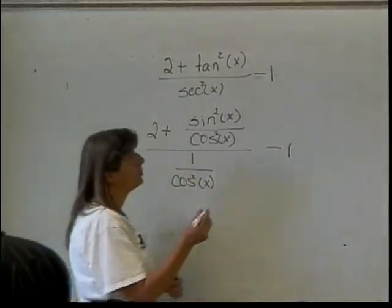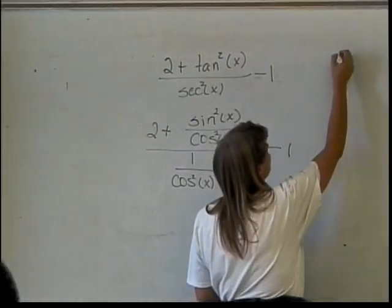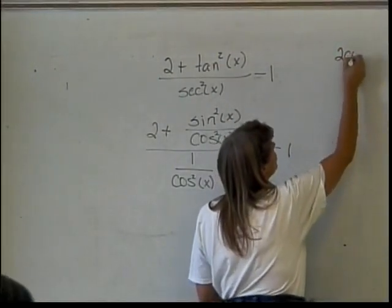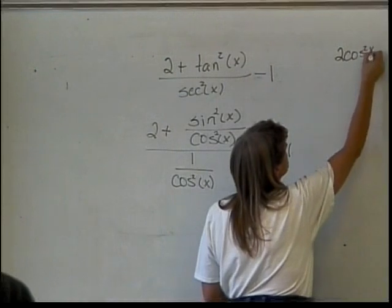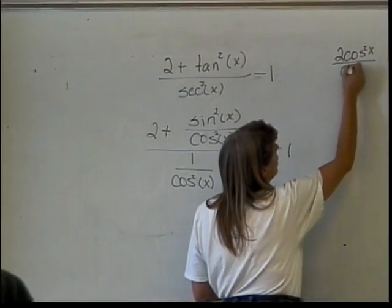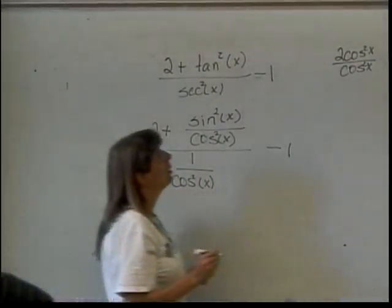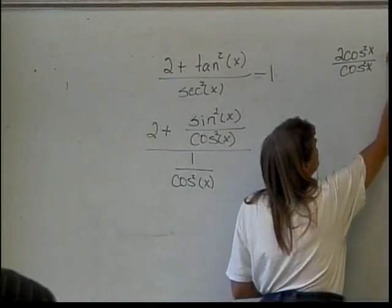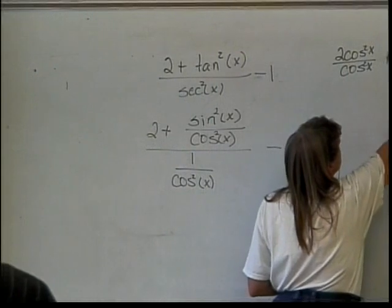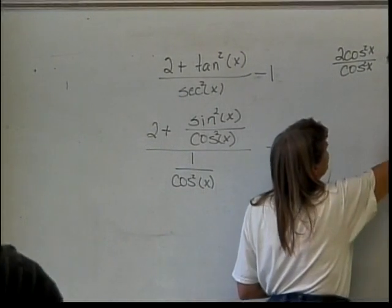Cosine squared of x would be the most easy common denominator. So, I will have 2 cosine squared of x divided by the cosine squared of x. That's just my 2.